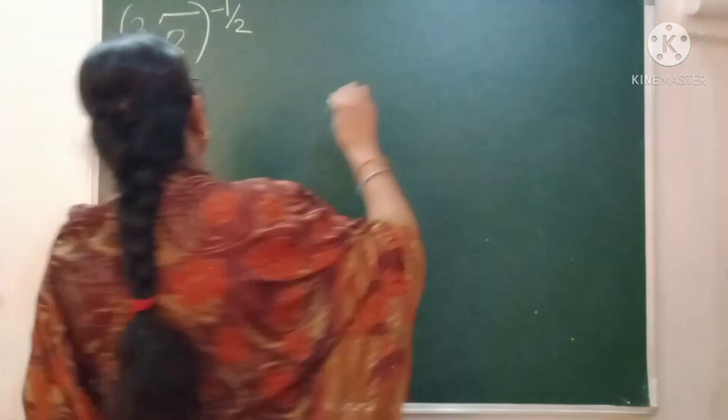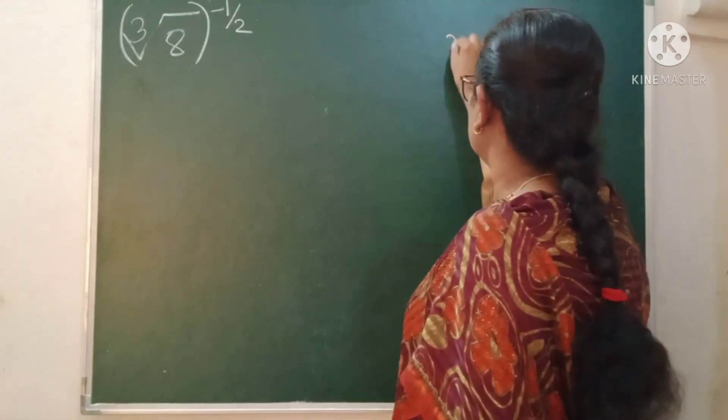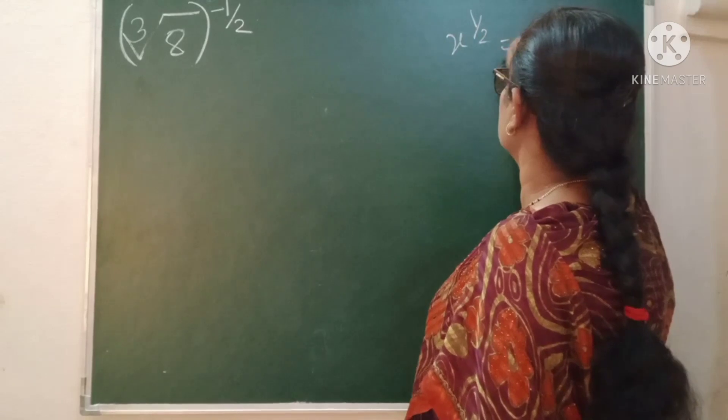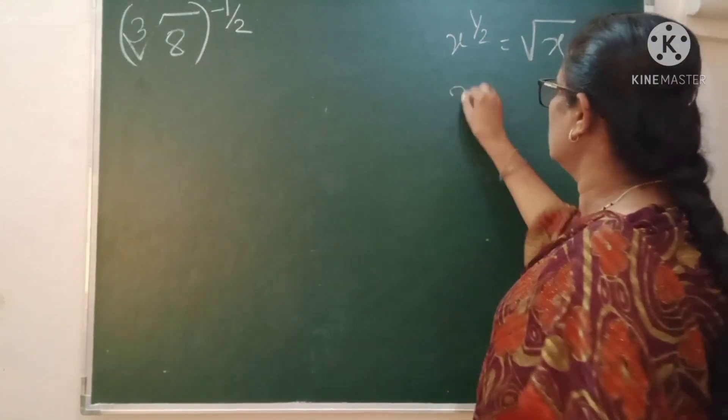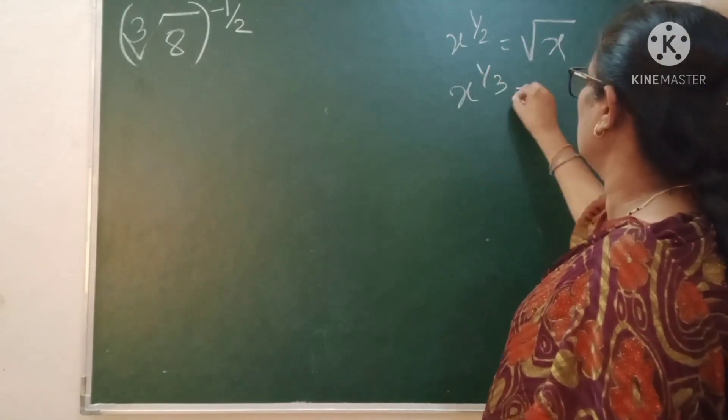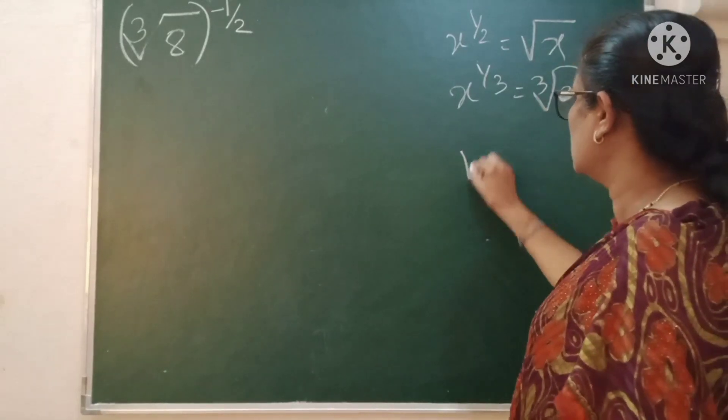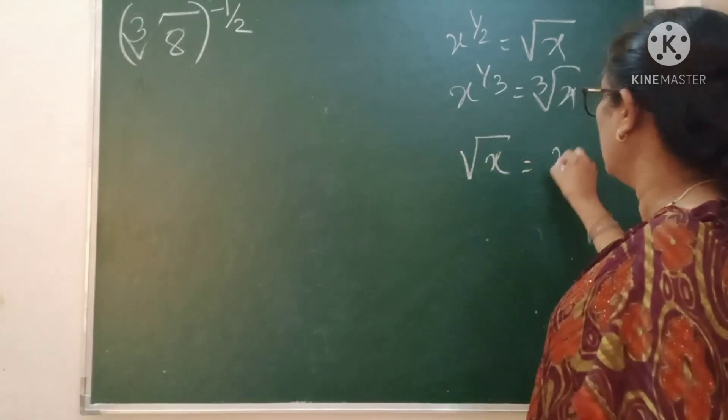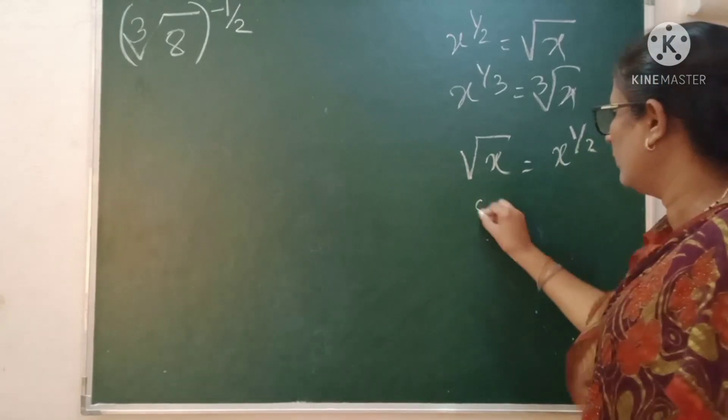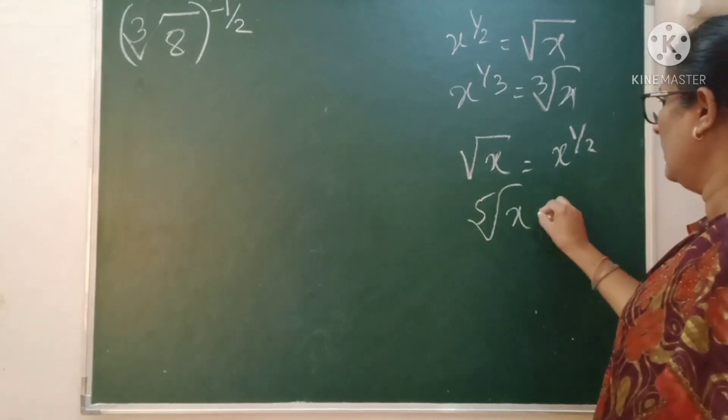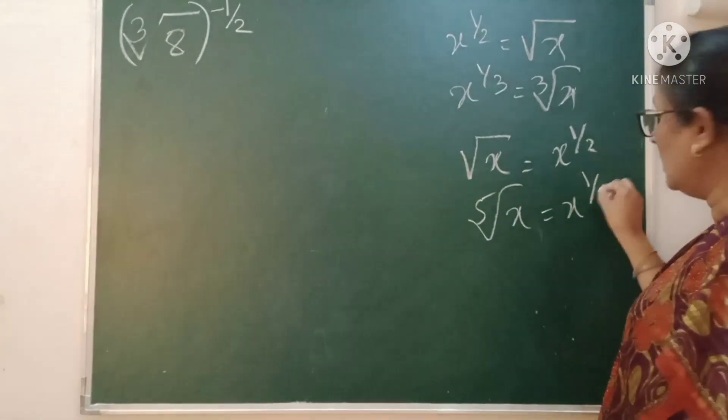Before going to that one, I will explain you. X raise to 1 by 2 is equal to square root of X. X raise to 1 by 3 is equal to Q root of X. Or you can say here, square root of X can be written as X raise to 1 by 2. Fifth root of X can be written as X raise to 1 by 5.